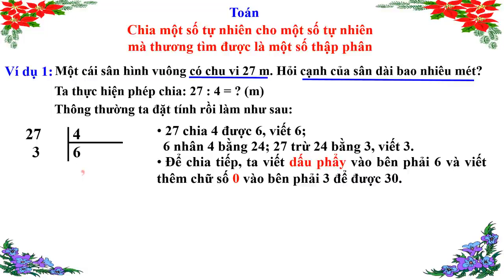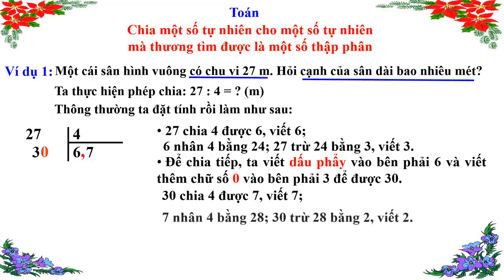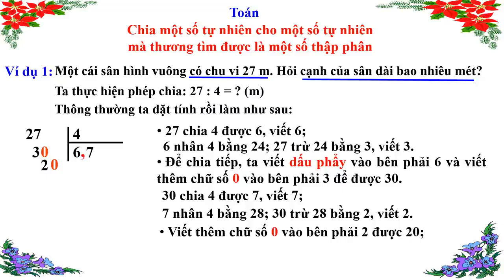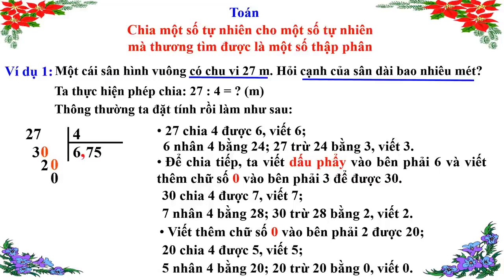Thông thường ta đặt tính. Viết dấu phẩy vào bên phải số 6 ở thương, và thêm 0 vào bên phải số 3 để được 30. Rồi chúng ta chia tiếp: 30 chia 4 được 7, viết 7 ở thương; 7 × 4 = 28. Chúng ta đã giải được câu hỏi của bài toán rồi. Vậy cạnh của sân là 6,75m.